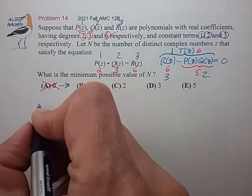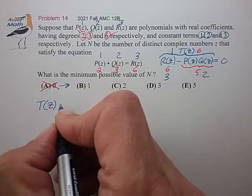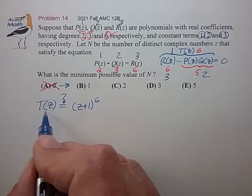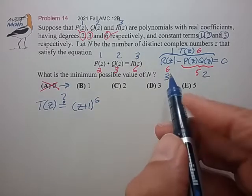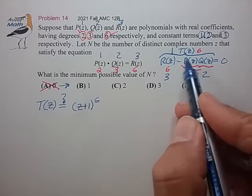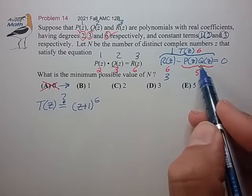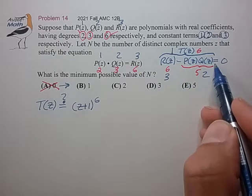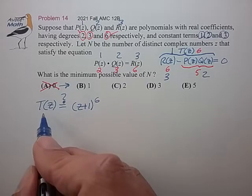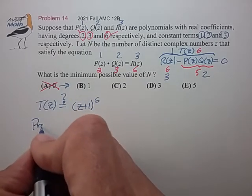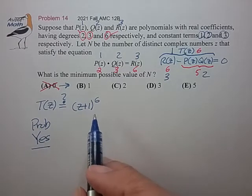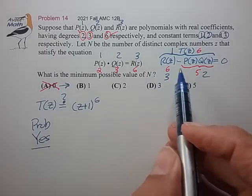So what would that look like? The question is, can we form a T(z) that looks like this? Now, R(z) has 6 free coefficients that I could adjust, P(z) has 2 free coefficients, and Q(z) has 3 free coefficients. So all totaled, I have 11 free coefficients to try to form this T(z). So I know that the answer to this question is probably yes. I can probably form a polynomial of this form, but let me see if I can make that a little more certain. Let me see if I can actually form such a polynomial.